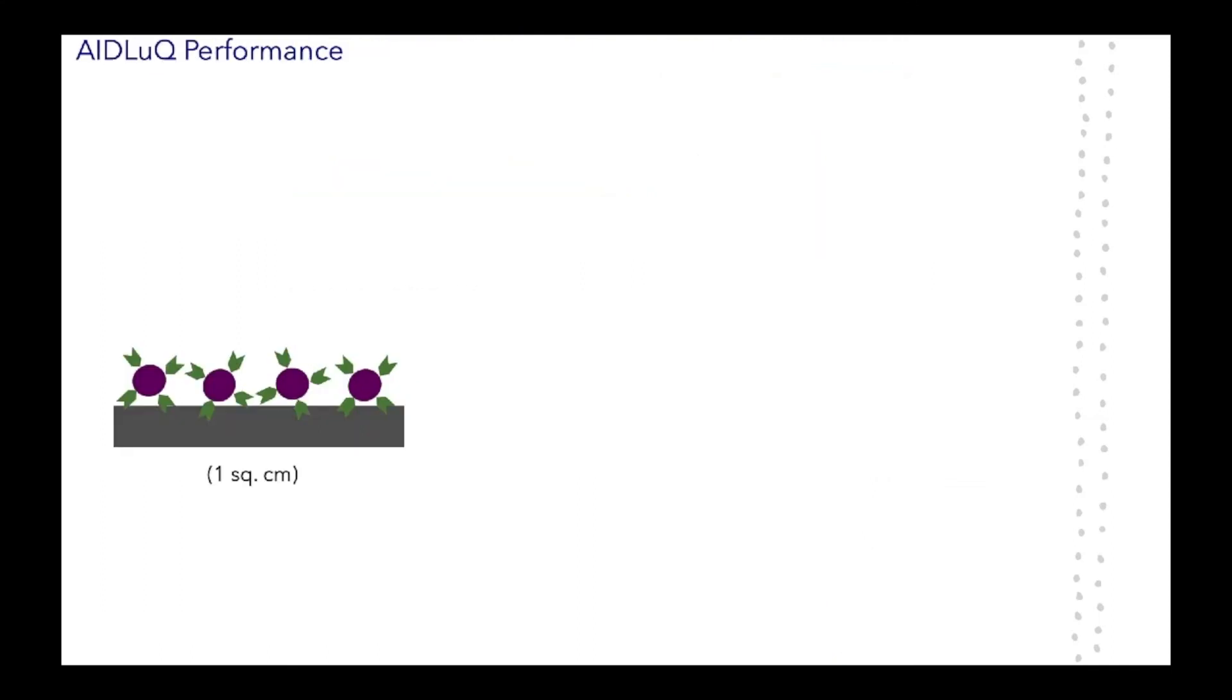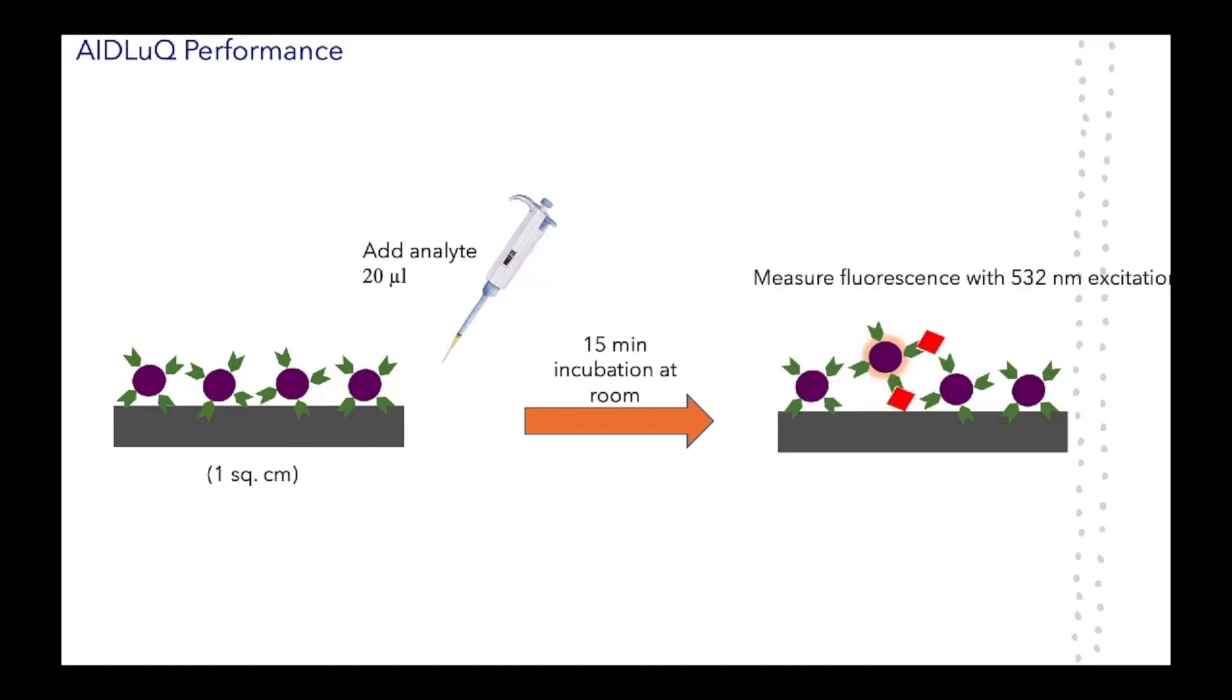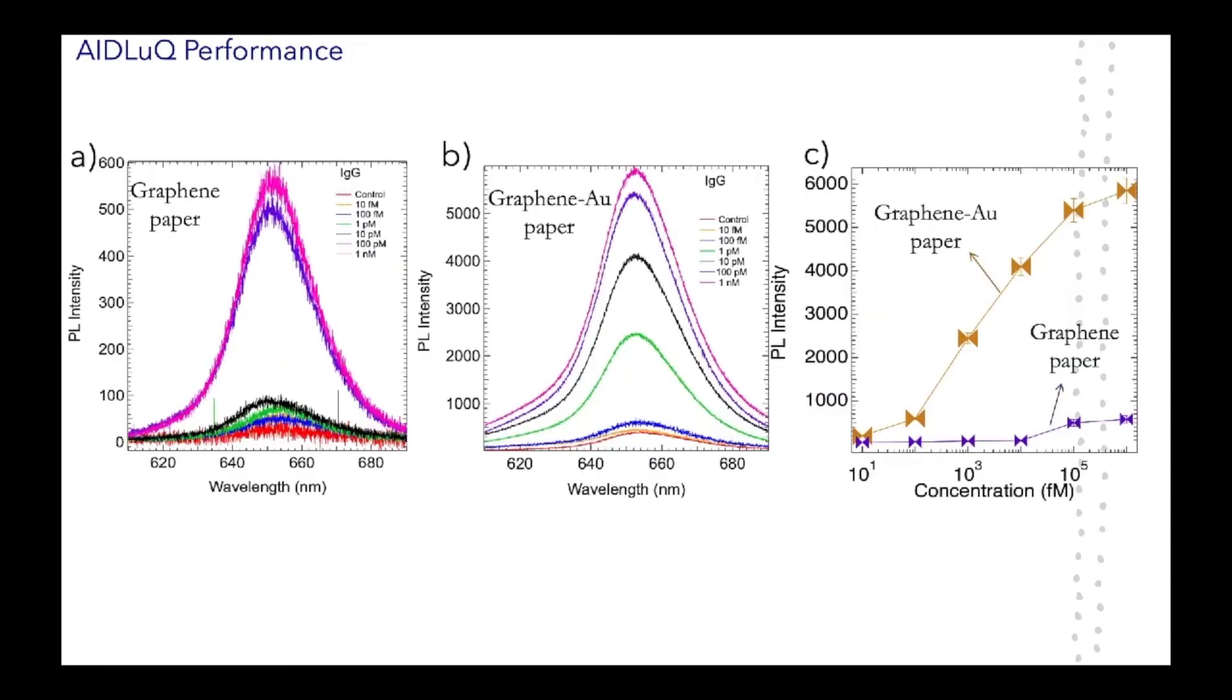Now, to test how well this can detect IgG, we can drop cast an IgG analyte in known concentrations, incubate for 15 minutes at room temperature, and then measure the fluorescence in the lab using a spectrometer with a 532 nanometer or a green laser. So, this is how the results look from the lab spectrometer. We are able to see that this platform is capable of measuring 10 femtomoles of IgG very accurately.